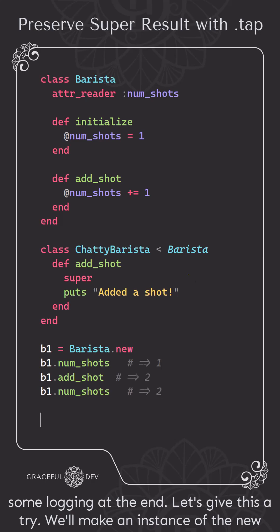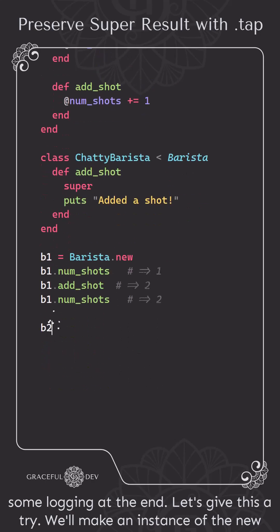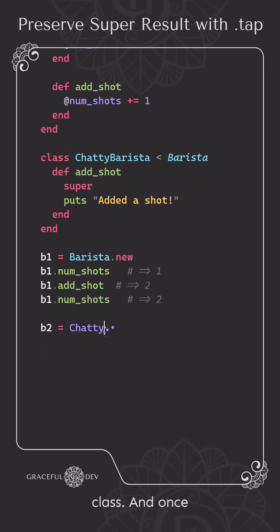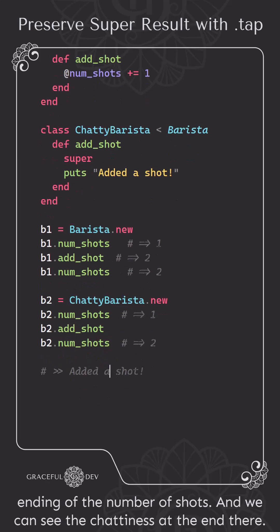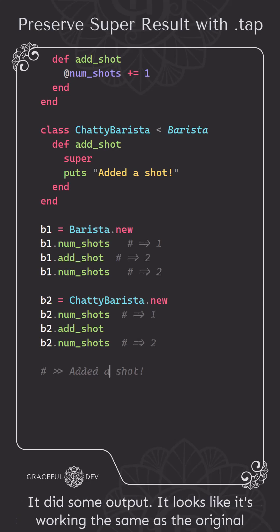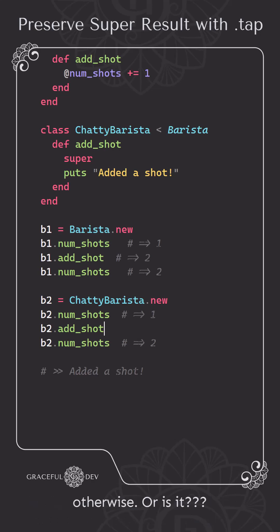Let's give this a try. We'll make an instance of the new class, and once again it starts out with one shot. We'll add a shot, and then we'll check the ending number of shots, and we can see the chattiness at the end there — it did some output. It looks like it's working the same as the original otherwise.